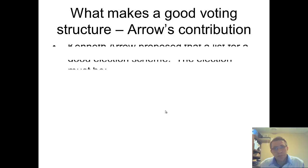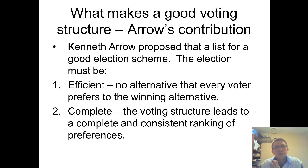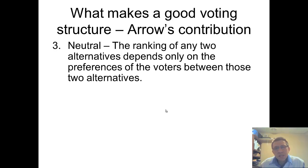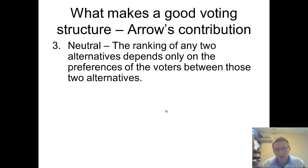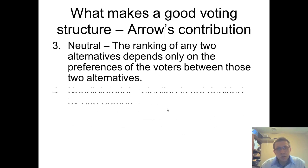As for what makes a good voting structure, there is a lot of math behind this that we won't cover. Kenneth Arrow, a Nobel Prize-winning economist, proposed a list of criteria for a good election scheme. First, efficient: no alternative that every voter prefers to the winning alternative should exist — if everyone prefers someone else to the winner, that's not efficient. Second, complete: the voting structure leads to a complete and consistent ranking of preferences. Third, neutral: the ranking of any two alternatives does not depend on any other candidate — adding a third party wouldn't affect the ranking of the original two. Fourth, non-dictatorial: the election is not decided by a single person.